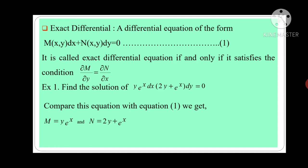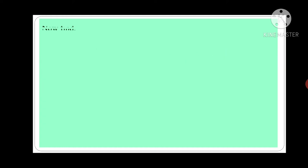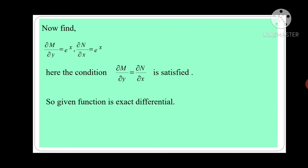Now you will see one example. Find a solution of y·e^x dx plus, in bracket, 2y plus e^x, dy is equal to zero. Now compare this equation with equation first. We can write M is equal to y·e^x and N is equal to 2y plus e^x. Now find del M by del y and del N by del x — means partially differentiate M with respect to y and partially differentiate N with respect to x. We get del M by del y is equal to e^x and del N by del x is equal to e^x. You can observe the condition del M by del y is equal to del N by del x is satisfied. So we can say the given function is exact differential.